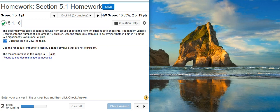Here's our problem statement. The accompanying table describes results from groups of 10 births from 10 different sets of parents. The random variable x represents the number of girls among 10 children.